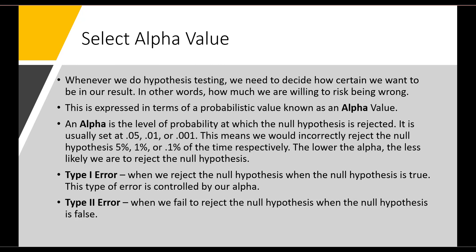We have two types of error associated with this. Type 1 error is when we reject the null hypothesis when the null hypothesis is true — meaning we say there is a difference when there really isn't. This is the type of error we control through an alpha value. Type 2 error is when we fail to reject the null hypothesis when the null hypothesis is false — meaning there actually is a difference between our population parameter and the specified value, but we conclude there isn't.